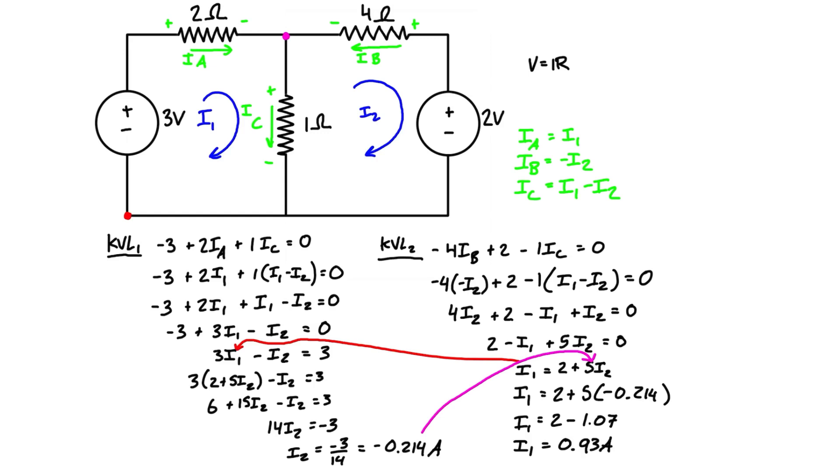So now we know i1 and i2. If that's what you were asked for in the beginning of the problem, you can just write that and stop here. If you were asked to find the branch currents or like the currents flowing through each resistor, we can do that as well. Because i1 is just equal to ia, so ia is going to be equal to 0.93 amps. We can label it on the diagram, 0.93 amps. ib is equal to negative i2, so i2 is negative 0.214, so the negative of that is just positive 0.214.